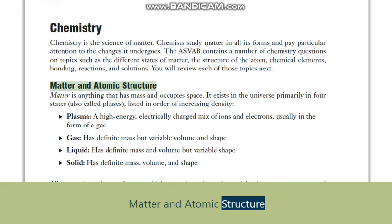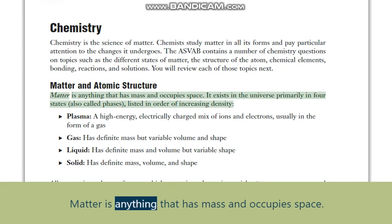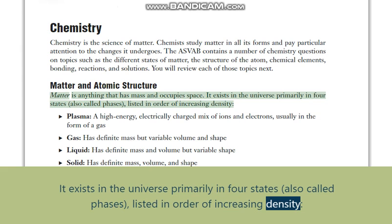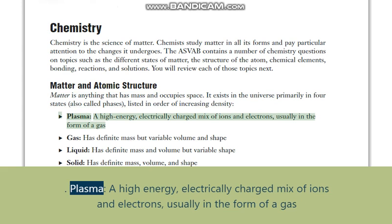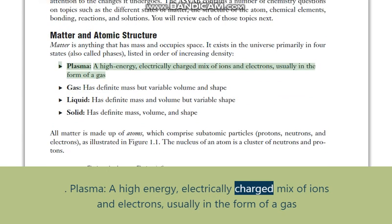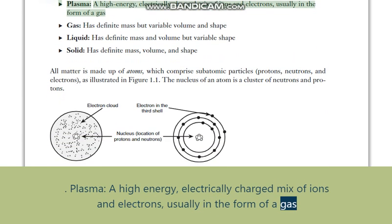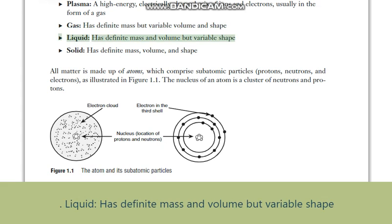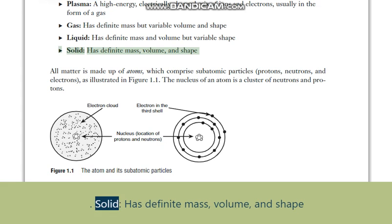Matter and atomic structure. Matter is anything that has mass and occupies space. It exists in the universe primarily in four states, also called phases, listed in order of increasing density: plasma — a high-energy, electrically charged mix of ions and electrons, usually in the form of a gas; gas — has definite mass but variable volume and shape; liquid — has definite mass and volume but variable shape; solid — has definite mass, volume, and shape.